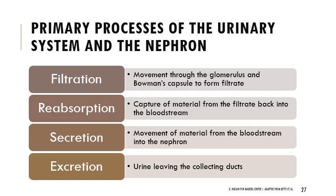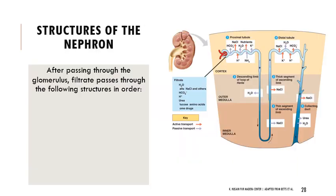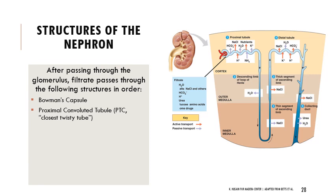To summarize: filtration is the process of going from blood into the nephron; reabsorption is getting material back from the nephron; secretion is putting stuff into the nephron after the filtration point; and excretion is anything left getting through the collecting ducts. A lot of the twisty portions of the nephron are in the cortex, and the loop of Henle extends into the medulla. After material passes through the glomerulus and becomes filtrate, it passes through Bowman's capsule, the proximal convoluted tubule (PCT), the descending and ascending limbs of the loop of Henle, the distal convoluted tubule (DCT), and finally the collecting duct.